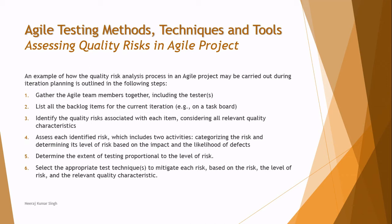Step three: identify the quality risks associated with each backlog item, considering all relevant quality characteristics. Step four: assess each identified risk. Risk assessment generally deals with determining the level of impact and the likelihood of that adverse event happening. Impact refers to severity, and likelihood refers to the probability of that event occurring, which depends on the frequency of use of that particular feature.